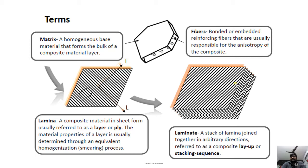Before going further, you need to know some terms used in composite materials. The composite contains two phases: the matrix phase and the reinforcement phase. When we combine both the matrix phase and the fiber phase, we get a layer of composite known as a lamina. When we take multiple laminas and glue them together, we get a laminate.